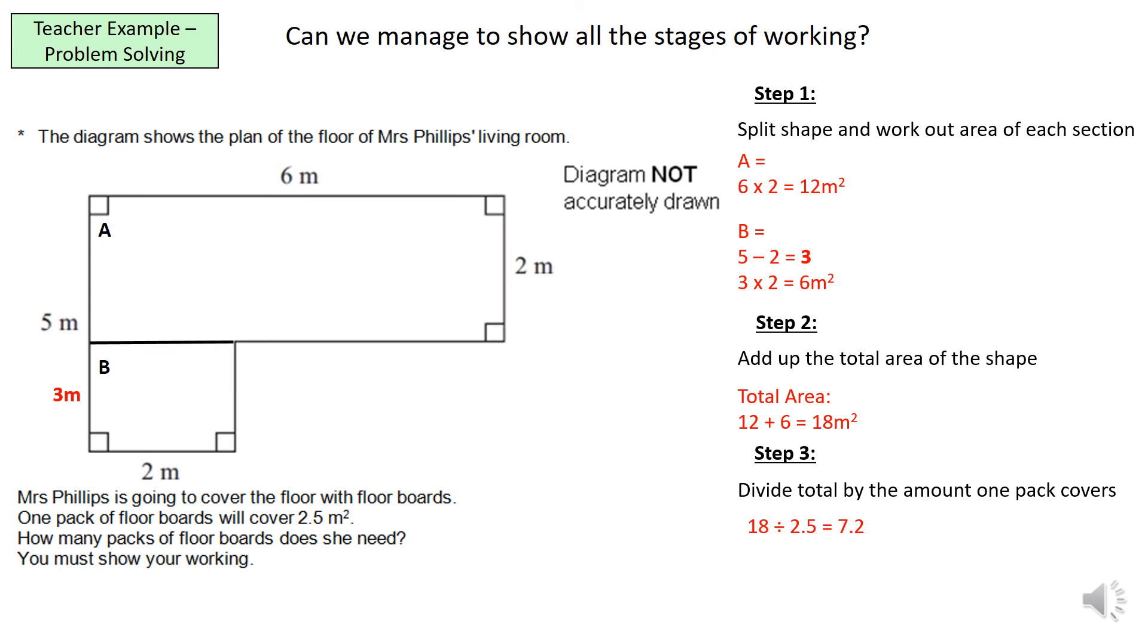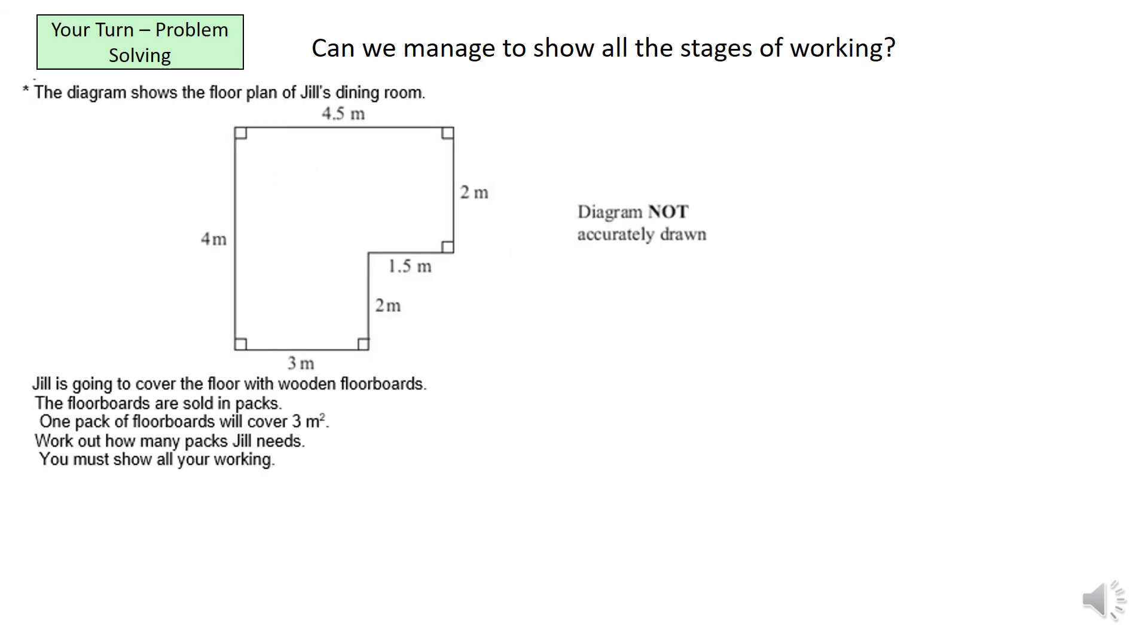And the answer to that simply is no, because she needs slightly more than 7 packs. So therefore, Mrs. Phillips will need 8 packs. Now I know what you're thinking. 7.2, hold on. If you round that to the nearest whole number, it's 7. So why does she need 8? As I explained, if she has 7, she doesn't have enough. So therefore, we need to go up. So be very careful when you're dealing with these questions. For this example, very similar to the last one, I want you guys to pause the video and have a go. And we'll come back together with the answers.